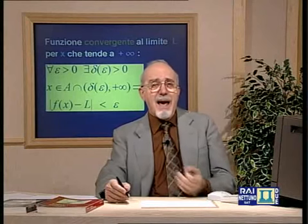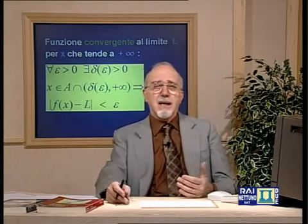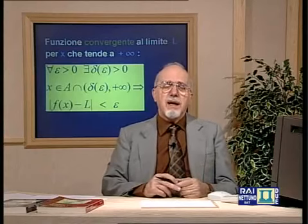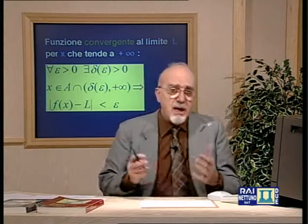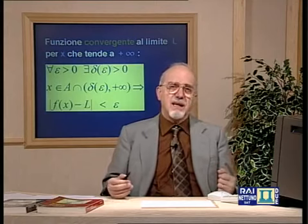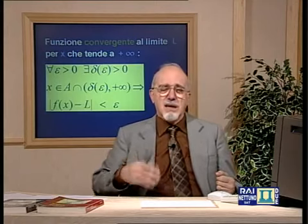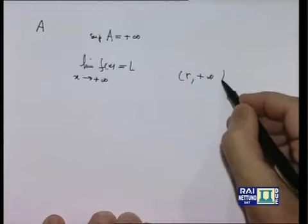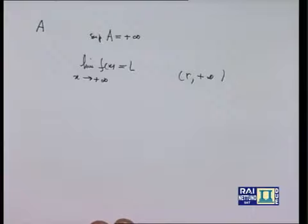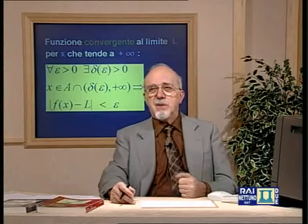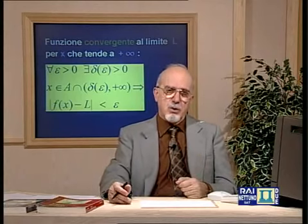Questo è il caso delle successioni: quando A = ℕ, nel caso delle successioni. Si è già detto che ℕ è privo di elementi di accumulazione in senso proprio — non ci sono numeri reali che siano punti di accumulazione di ℕ. Si può dire in senso analogico che +∞ è punto di accumulazione di ℕ, nel senso che se conveniamo di dire che gli intervalli del tipo (r, +∞) sono intorni di +∞ — ancorché +∞ non sia un numero — allora possiamo dire che +∞ è punto di accumulazione di ℕ.